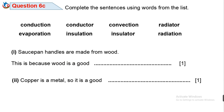Question 6C1: Saucepan handles are made from wood because wood is a good insulator — it does not conduct heat. Insulator is present in the list provided. Question 6C2: Copper is a metal, so it is a good conductor of heat. Metals are good conductors; insulators are poor conductors of heat. Ensure you use the appropriate word from the list provided.